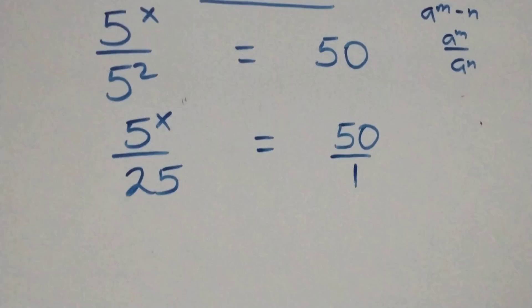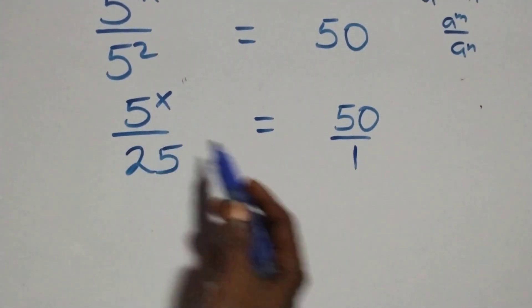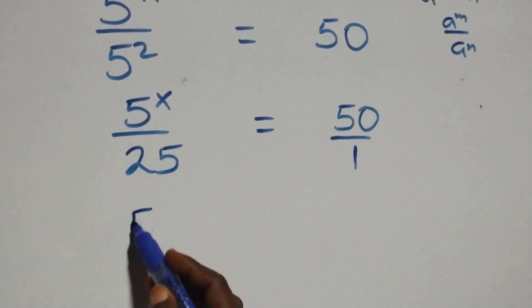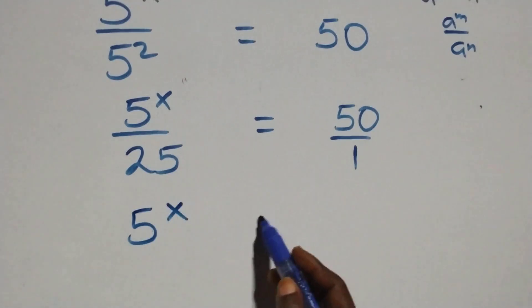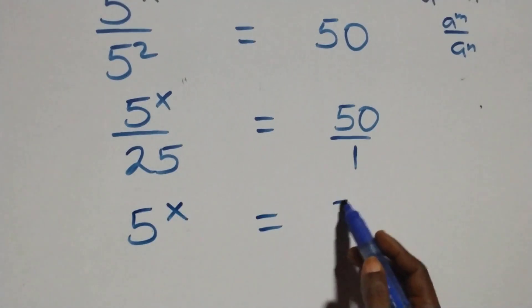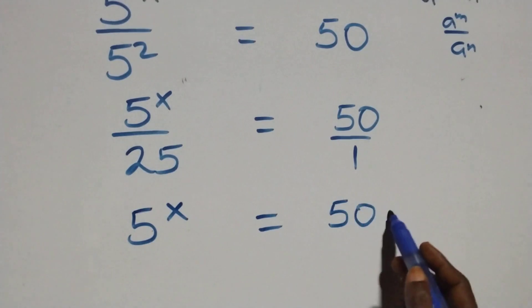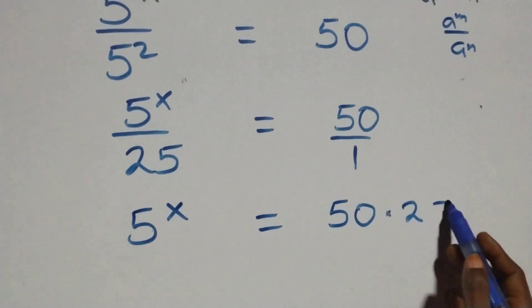The next step here, we cross multiply. 5 raised to power x times 1 is the same as 5 raised to power x equals to 50 times 25 here.